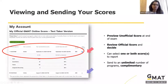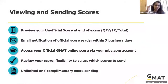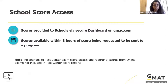On mba.com there's a 'Send Score' tab. You click it, select the programs you want to send to — Ctrl+F helps — and the school gets your official scorecard within eight hours. Make sure you keep track of all school deadlines and know when to take the GMAT, because you'll only receive the official scorecard after a week.